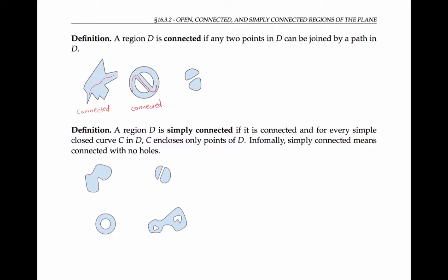In fact, there may be lots of different ways to draw such a path. The third region, however, is not connected, because it has two distinct pieces or components. And if I pick one point in one component and one point in the other component, there's no way to join these two points with a path that lies entirely in the shaded region — you have to exit the region to get from one point to the other.